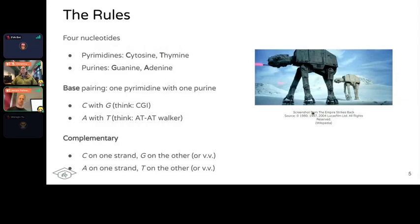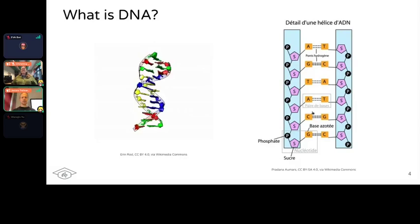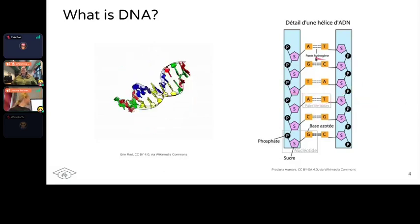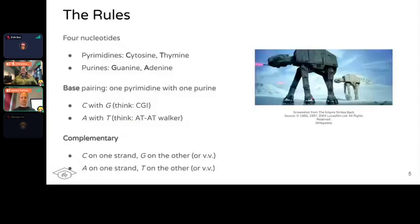The first two, cytosine and thymine, are the pyrimidines, and the purines are G and A — guanine and adenine. They have complementary pairs: C and G always go together — think CGI — and A and T always go together — think AT-AT Walker from Star Wars. The rule is always one pyrimidine to one purine, and these always pair in the same way.